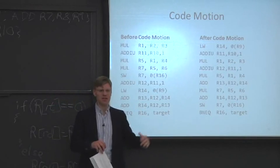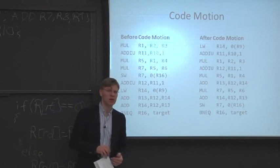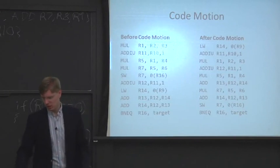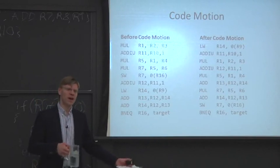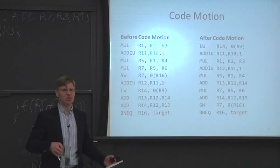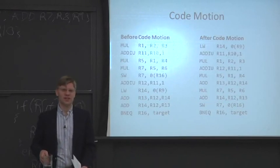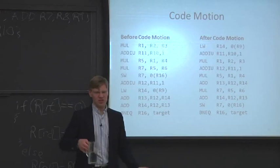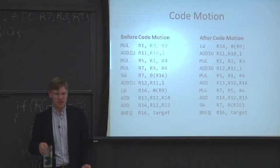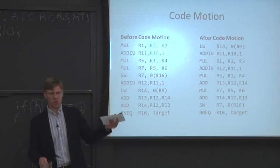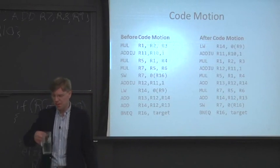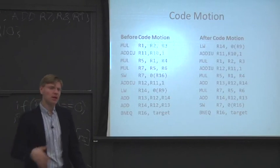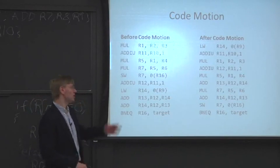Sometimes branches can only happen on certain alignments or performance is better. Roughly, we're trying to do valid reorderings of the code. We can't just move a read-after-write dependence — we can't move instruction A, which reads the result of instruction B, before B because it wouldn't make sense. But a lot of times the compiler has some flexibility in what it can move around.